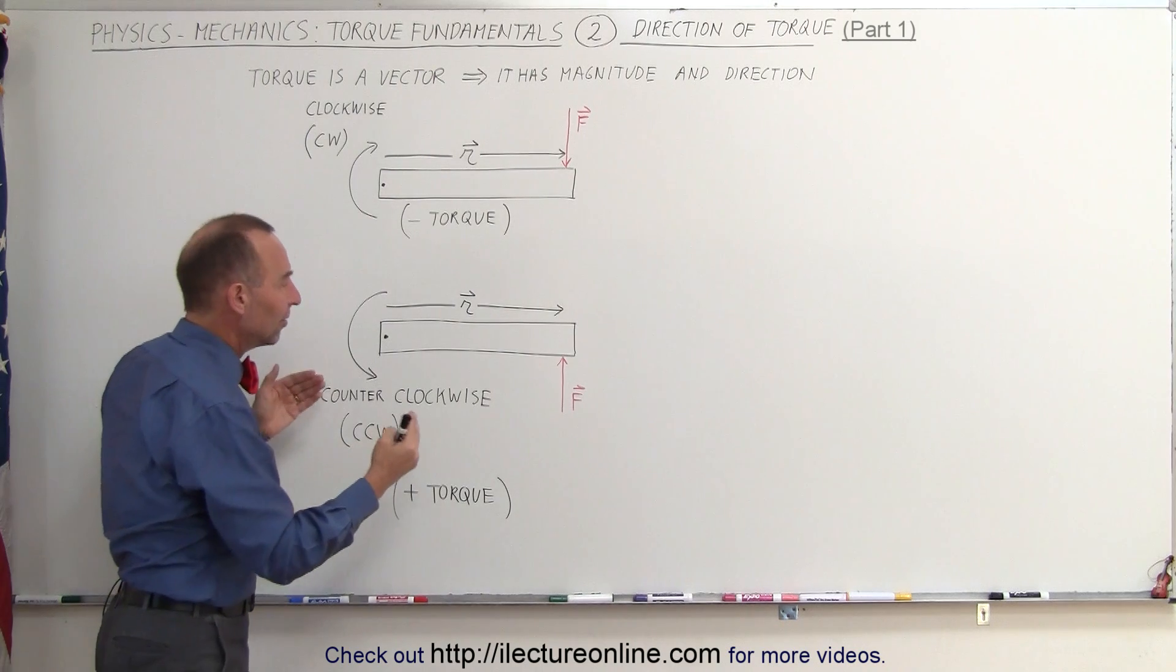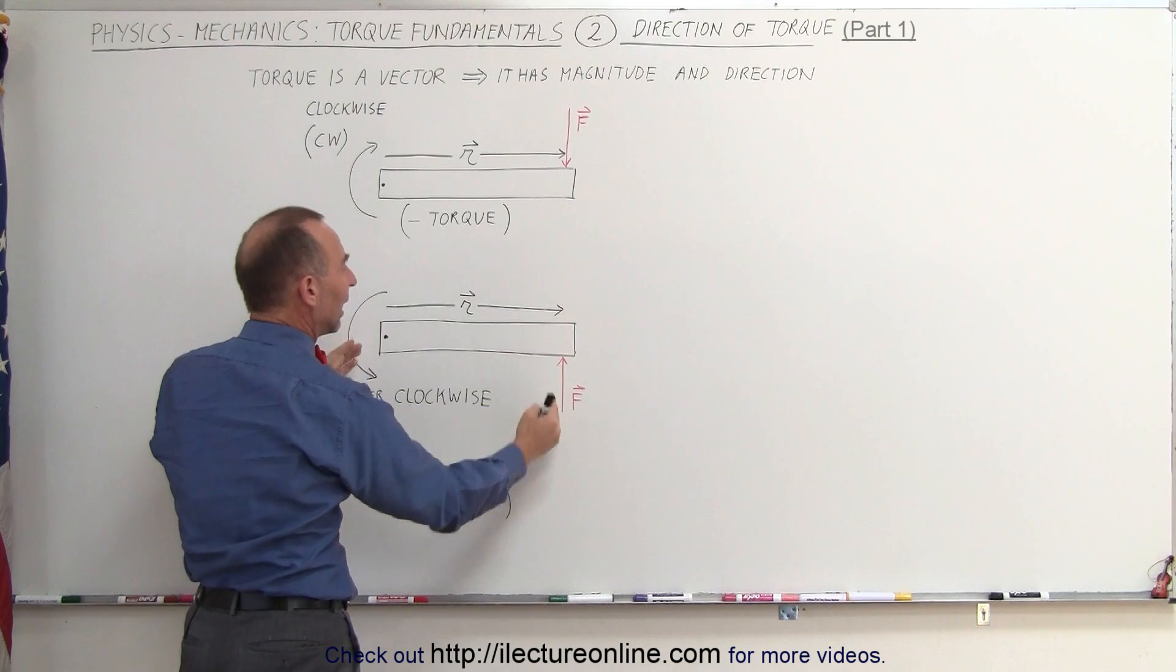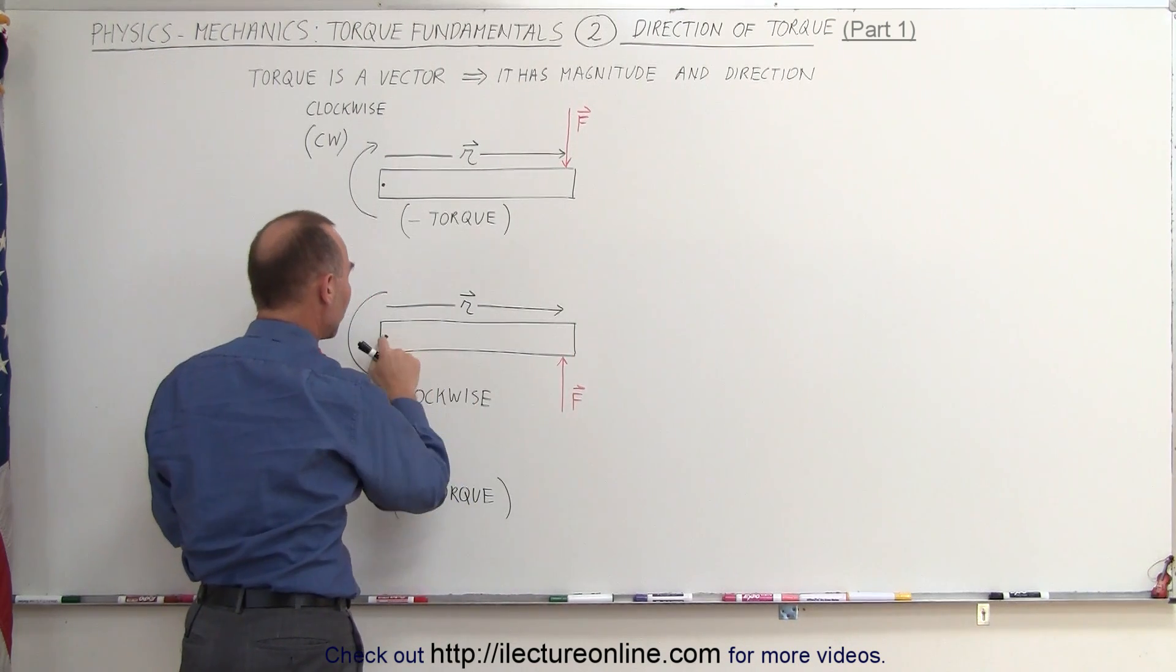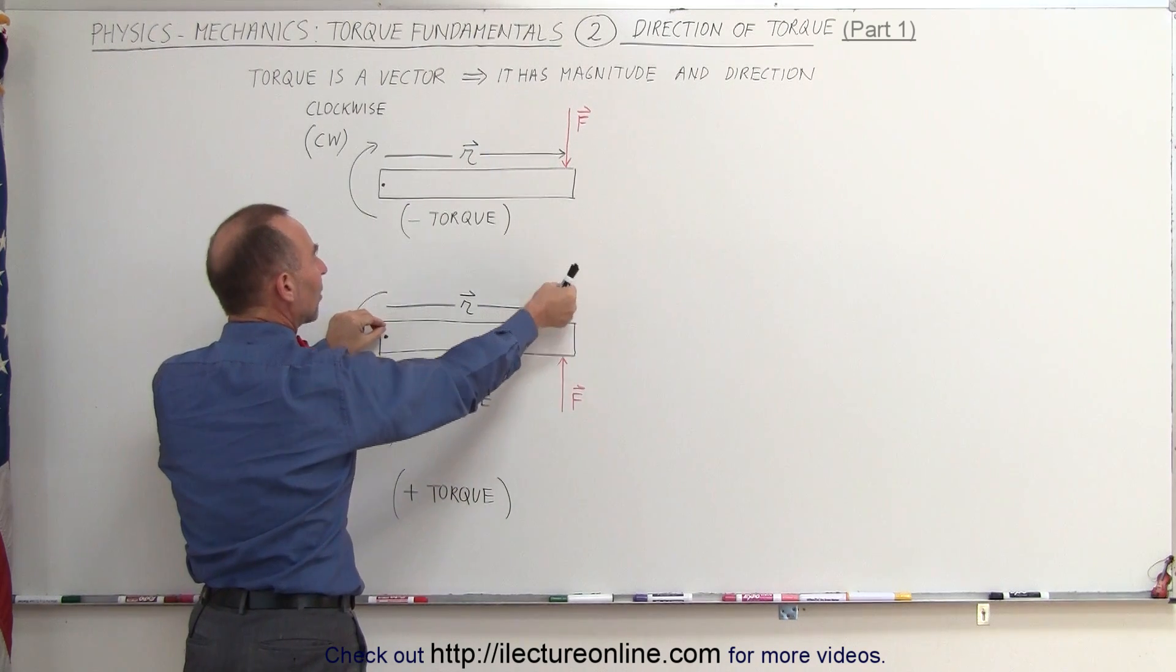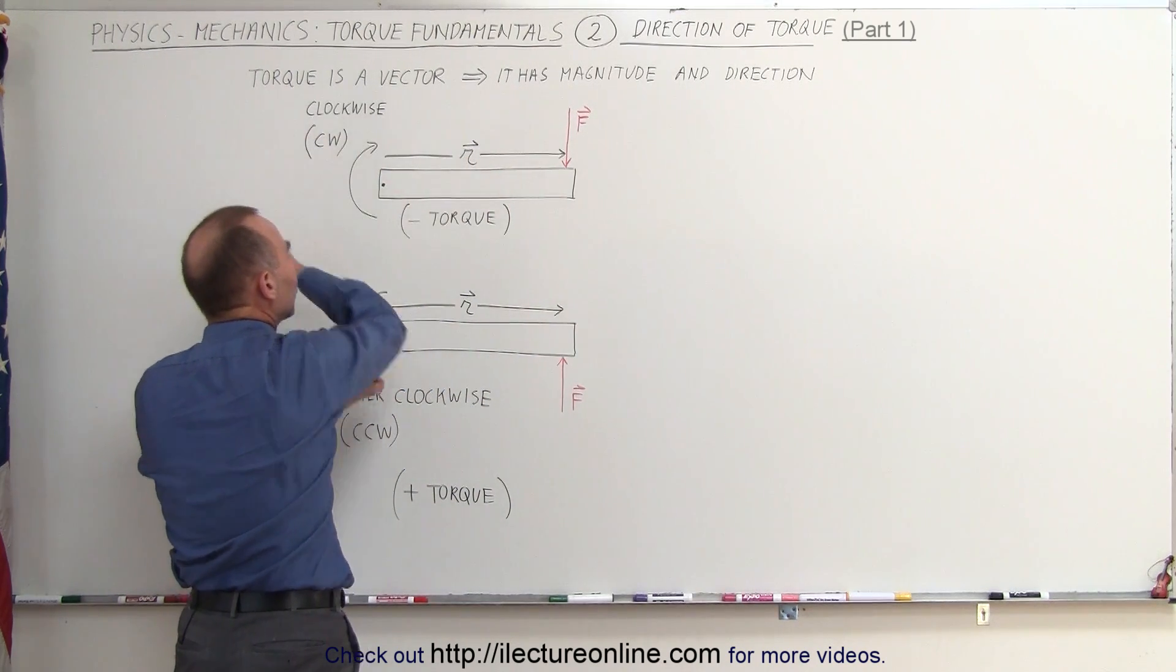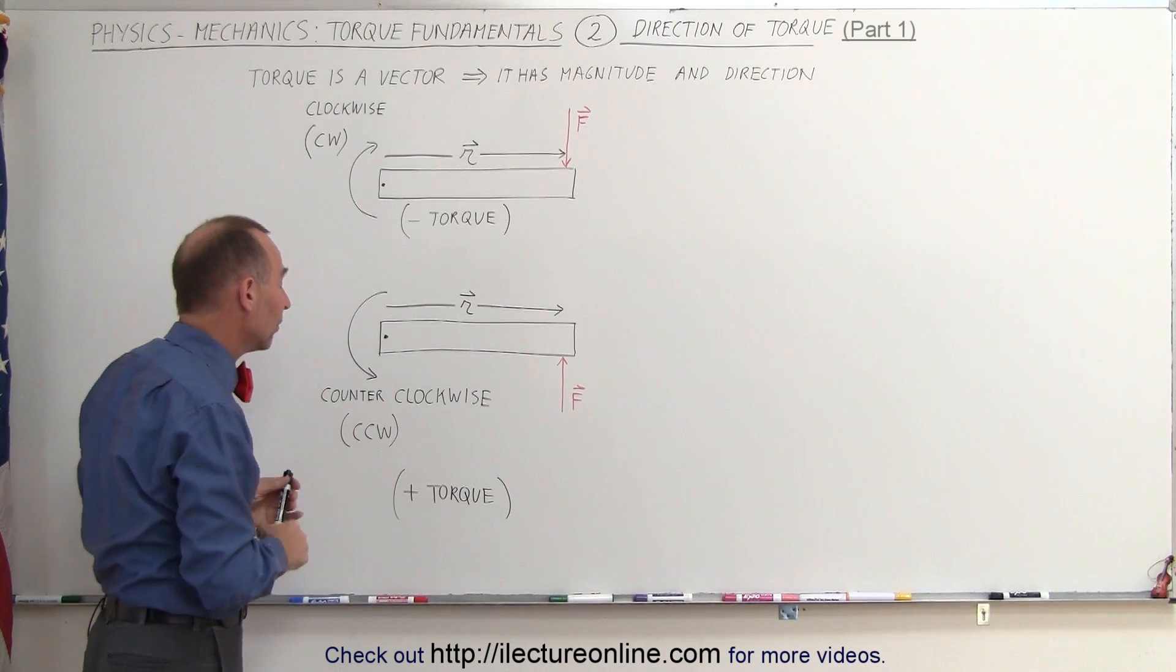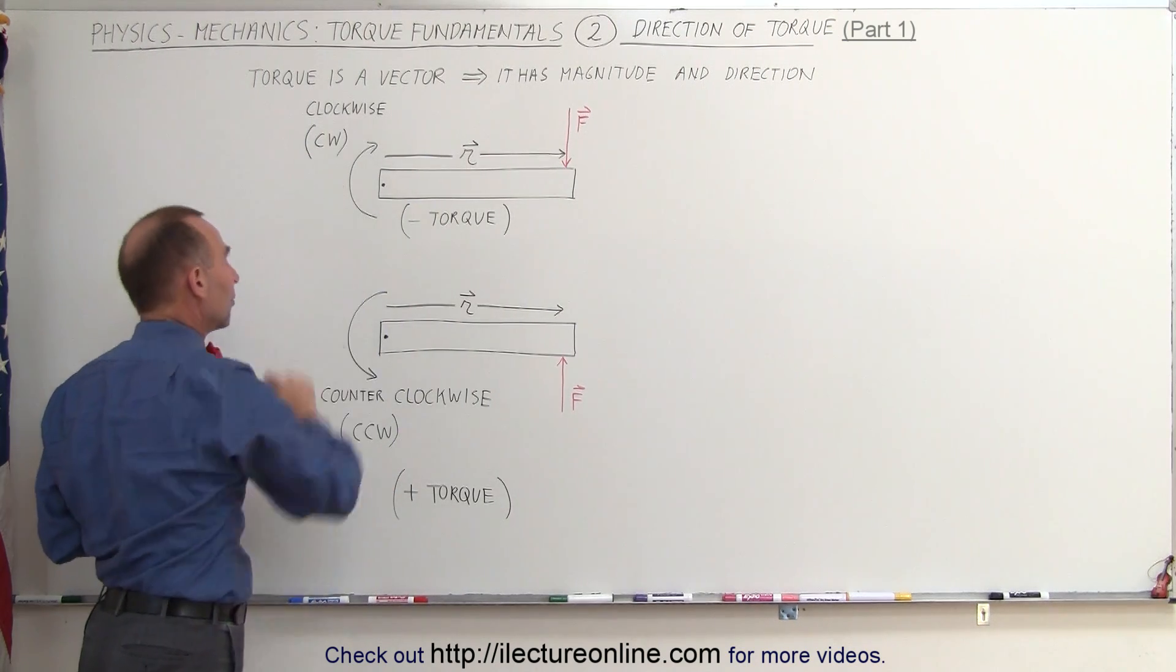You can then see here that the force is in the opposite direction. If this was the only force acting on this object, and again, the line of action of the force is over here, it's not going through the pivot point. Then you can see that this would cause this object to rotate in a counterclockwise direction, and therefore the direction of this torque would be counterclockwise. We write it as CCW for counterclockwise, and CW for clockwise.